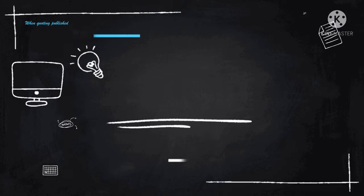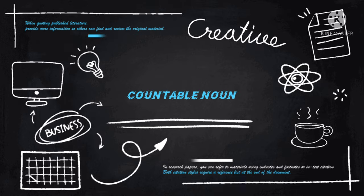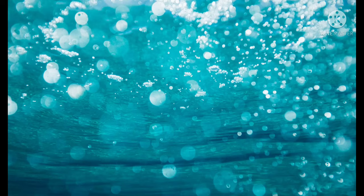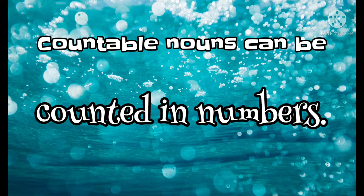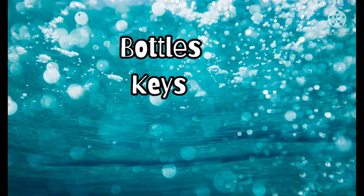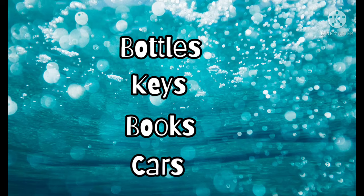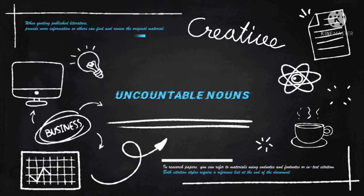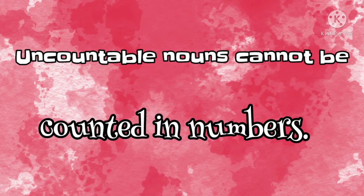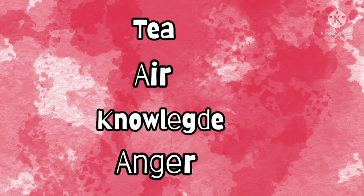Next comes the countable noun. Countable nouns can be counted in numbers — it's as simple as that. For example: bottles, keys, books, cars, etc. And lastly, the uncountable noun, which is the opposite of countable nouns — these cannot be counted in numbers. For example: tea, air, knowledge, anger, and many more.